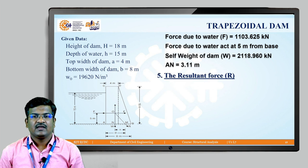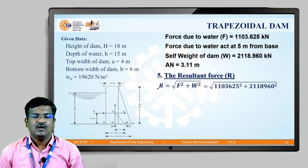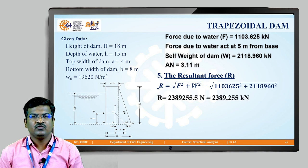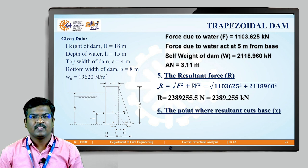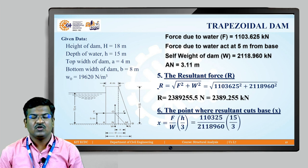The resultant force R = √(F² + W²) = √(1103.625² + 2118.96²) = 2389.255 kN. The X distance (where the resultant cuts the base) = (F/W) × (h/3) = (1103.625 / 2118.96) × 5 = 2.604 m.